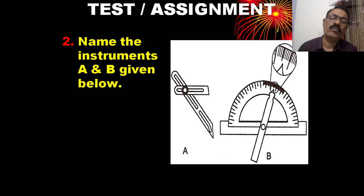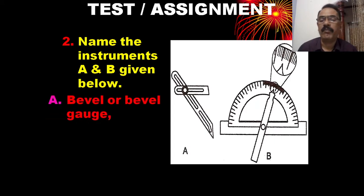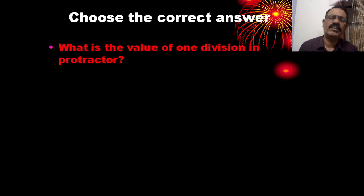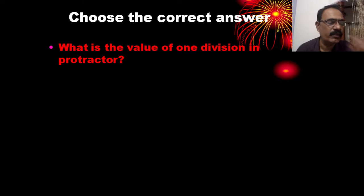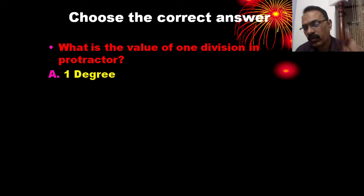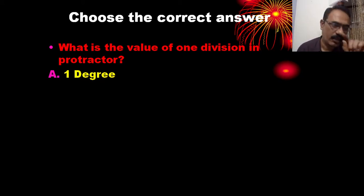Now let us identify instruments: instrument number 1 is the bevel gauge; instrument number 2, B, is the bevel protractor. The value of one division on the protractor is 1 degree, and since a protractor is a semicircle, it covers 0 to 180 degrees. Each division on the protractor corresponds to 1 degree.